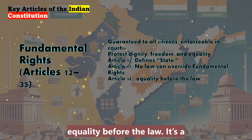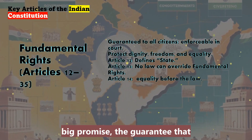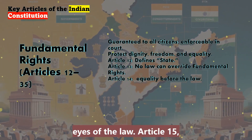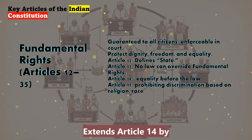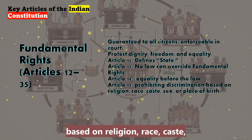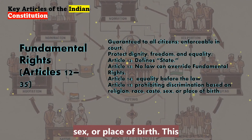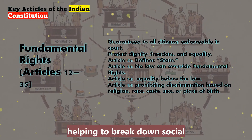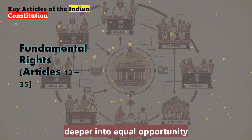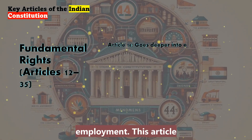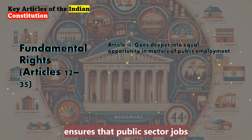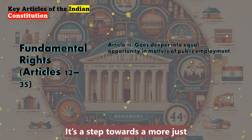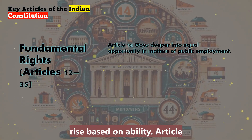Article 14 is about equality before the law — the guarantee that every person in India, regardless of who they are, will be treated equally in the eyes of the law. Article 15 extends Article 14 by prohibiting discrimination based on religion, race, caste, sex, or place of birth. This article is foundational for a country as diverse as India, helping to break down social barriers. Article 16 goes deeper into equal opportunity in matters of public employment, ensuring that public sector jobs are open to everyone based on merit, not their background — a step towards a more just society, allowing people to rise based on ability.